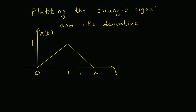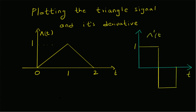Given this triangle signal, we want to plot it using MATLAB and also plot its derivative, which looks like the following signal. The derivative of the triangle signal is basically like a square wave with just one period. The value is one within the interval zero to one, and the value is minus one for the interval one to two.